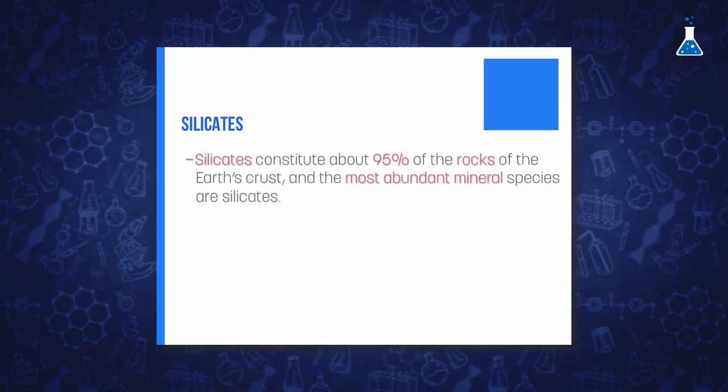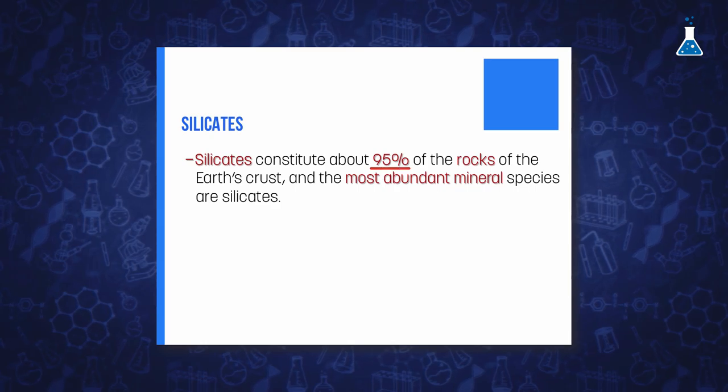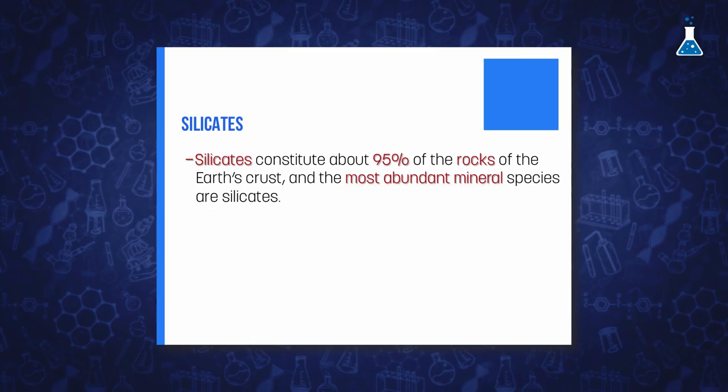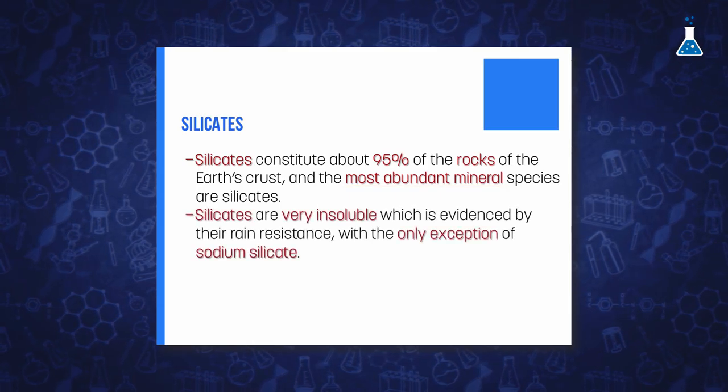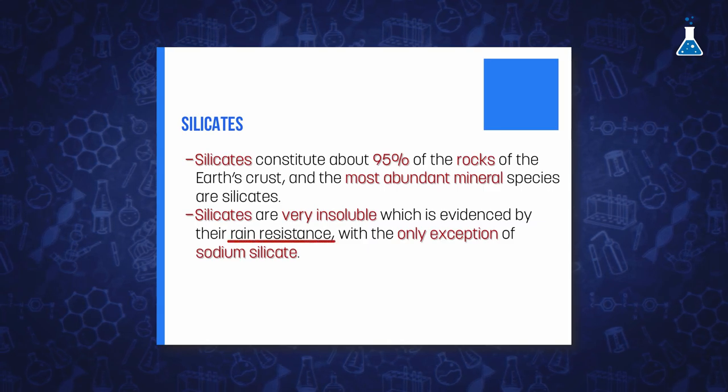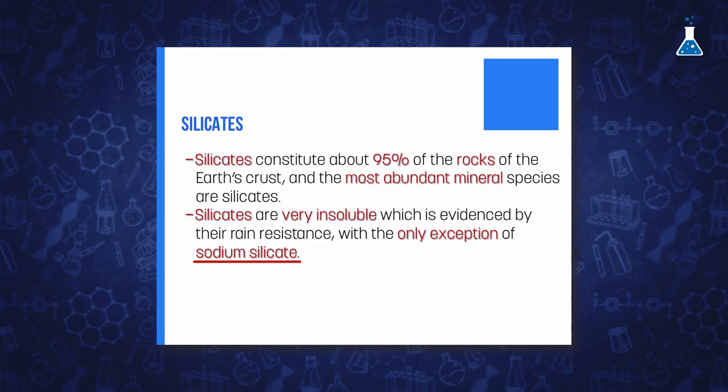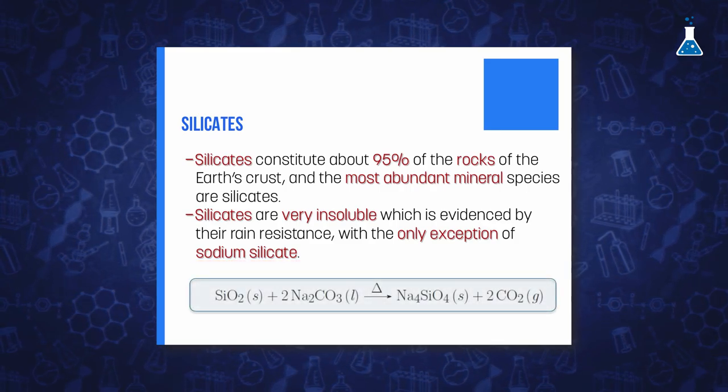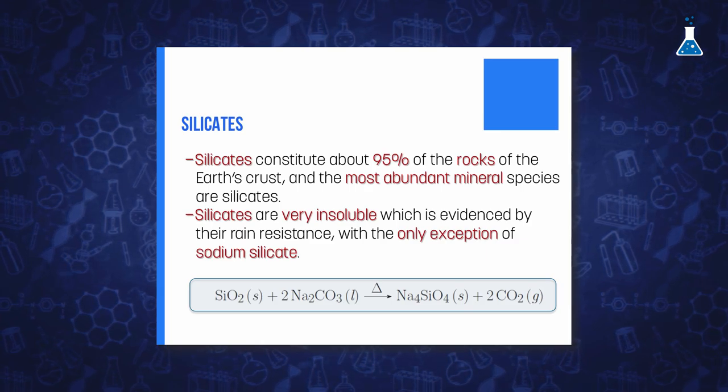On the other hand, silica constitutes about 95% of the rocks of the earth's crust, and the variety of silicate minerals is enormous. Generally, silicates are widely insoluble as evidenced by the rain resistance of rocks during millions of years. The only exception is sodium silicate, which can be prepared by reacting solid silicon dioxide with molten sodium carbonate.